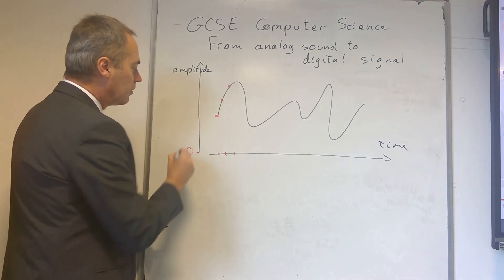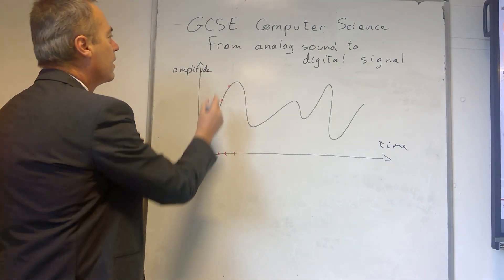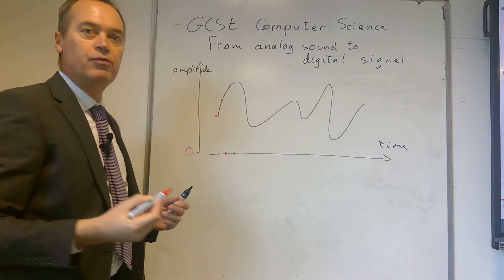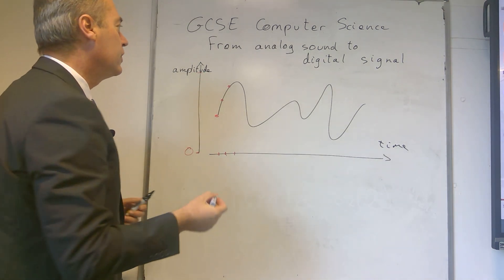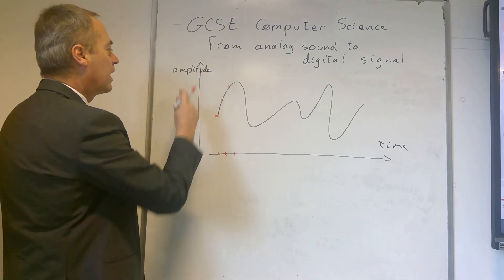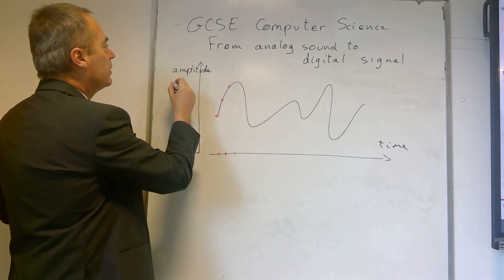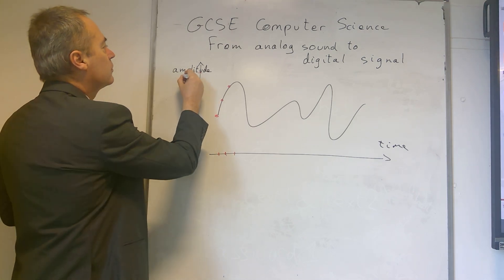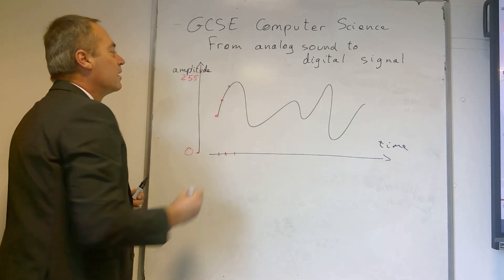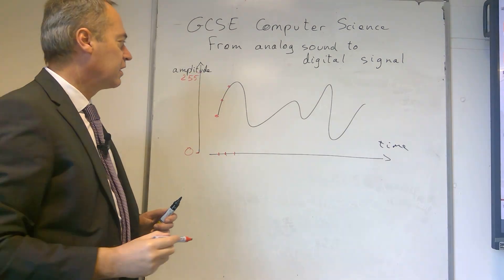The smallest value possible will be zero, and the maximum value that the microphone can record — you need to set that to the maximum value your analog to digital converter can take, which will depend on how many bits it has. In the case of an 8-bit ADC, the maximum value will be 255.